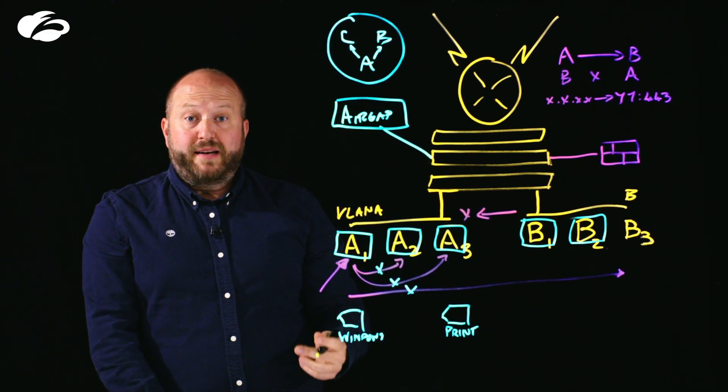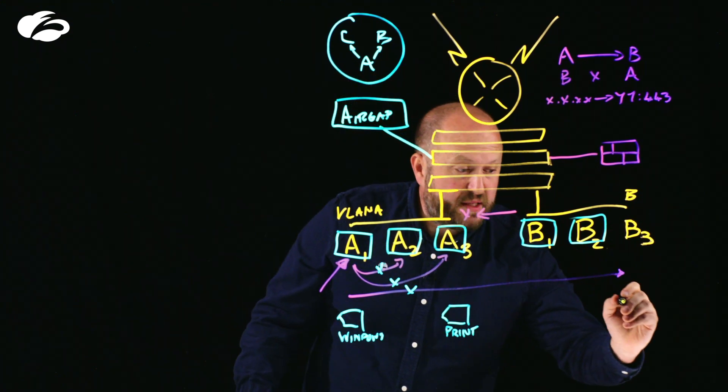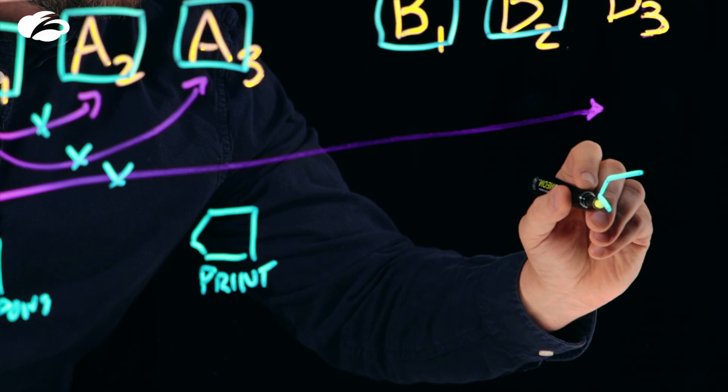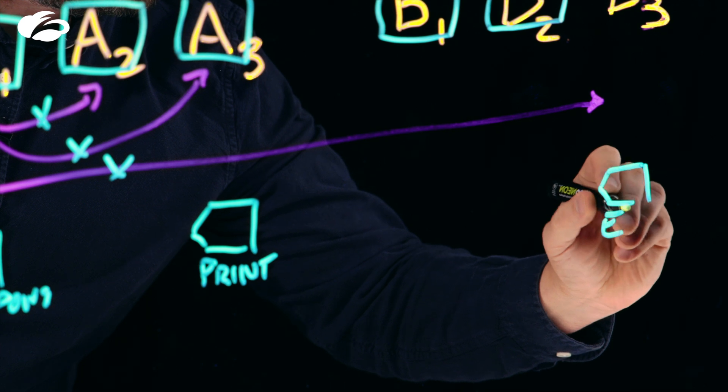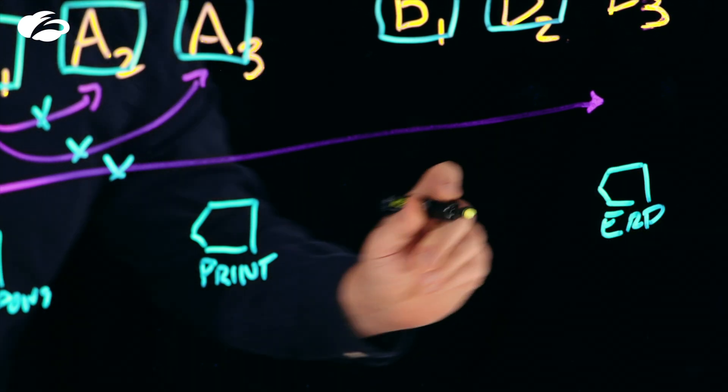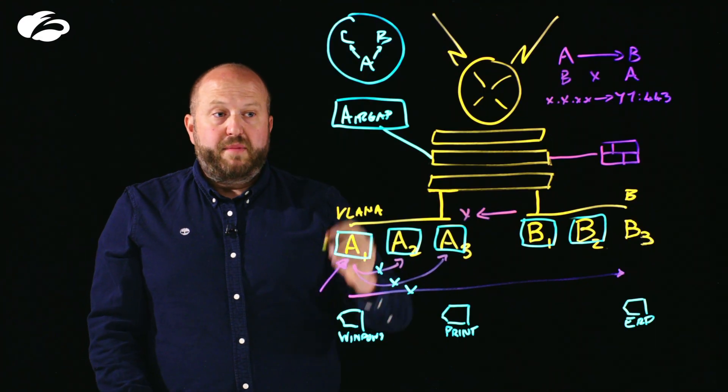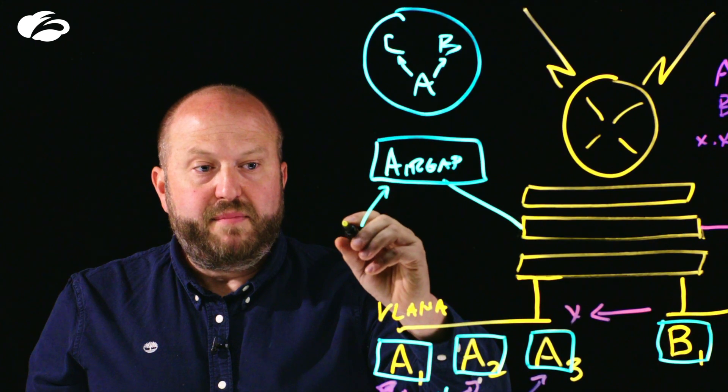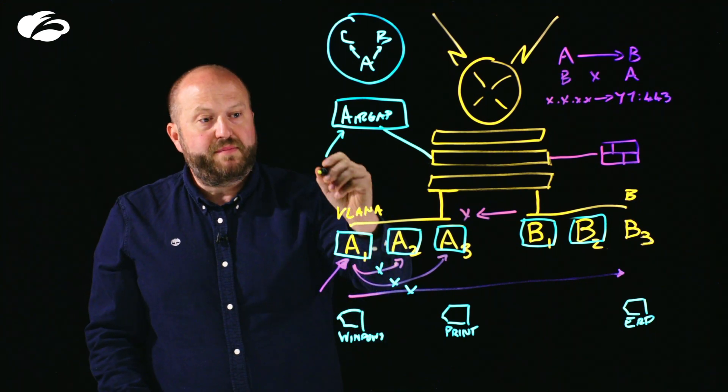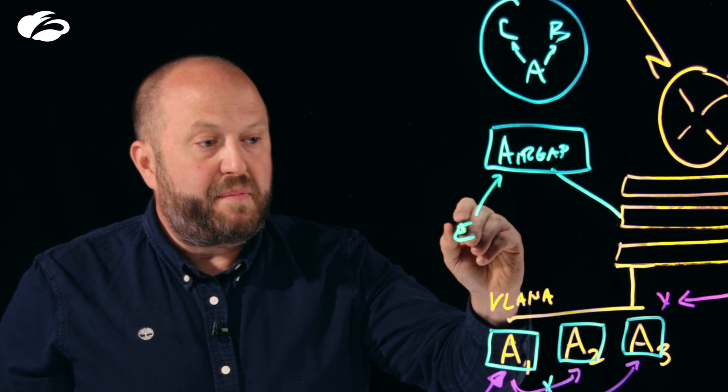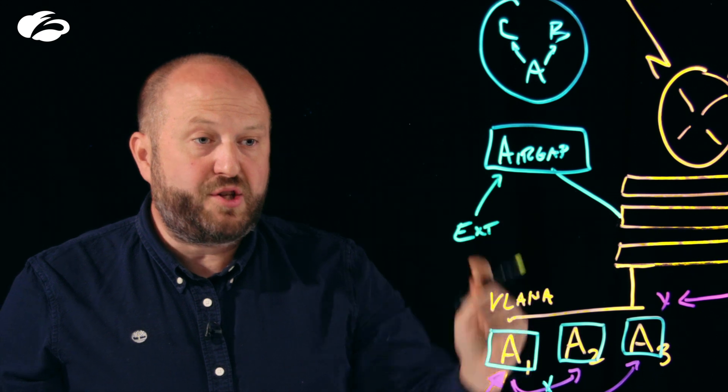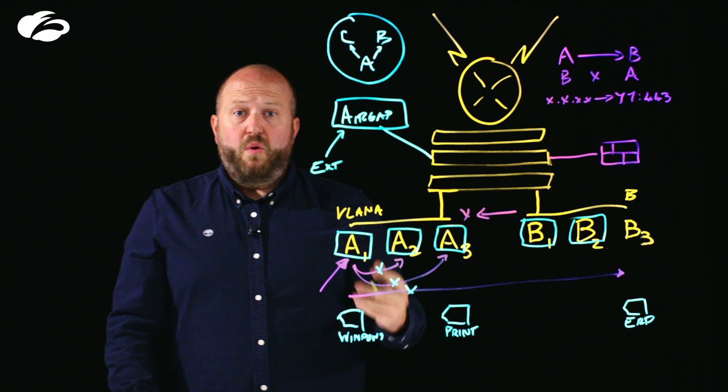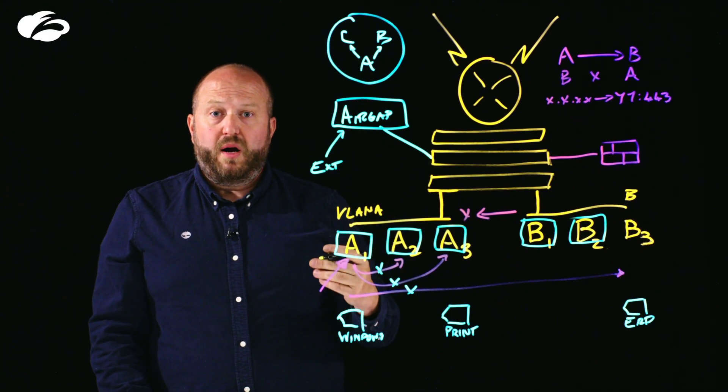And equally, you can manually tag. So for example, saying this is an ERP system over here. We can also integrate with third parties such as Microsoft Active Directory to grab user and group information. Third party databases for additional device information or EDR solutions for posture.